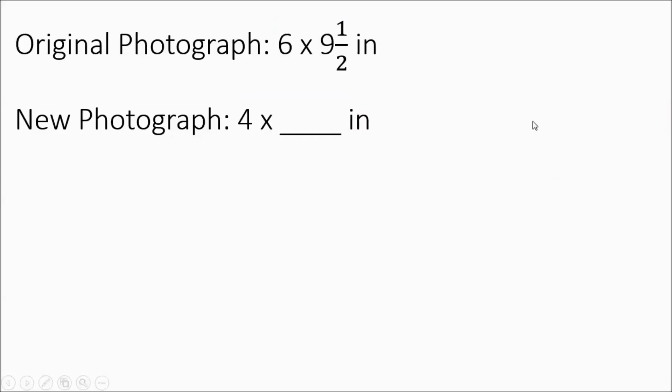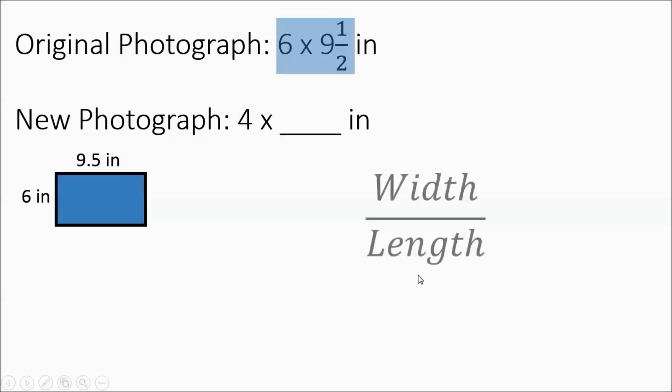All right, so this picture, the original picture was 6 by 9 and a half, and we're going to make it to 4 by something. Now this one's not as obvious. First of all, it's getting smaller, and also we're dealing with fractions. So this one, you're going to definitely want to set up your proportion. We'll do our 6 by 9 and a half, 6 by 9 and a half. We'll set up our width to length.